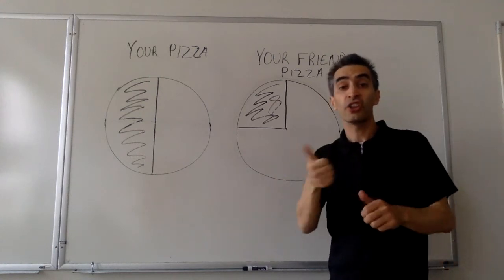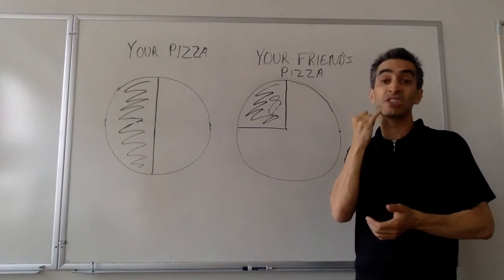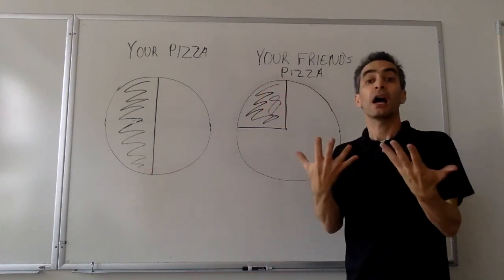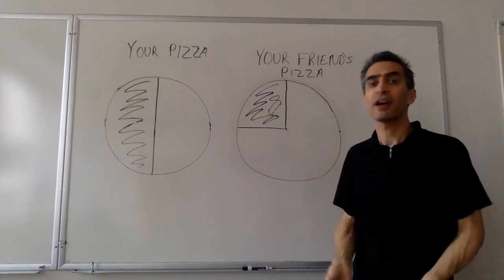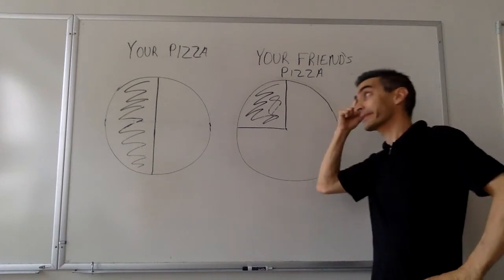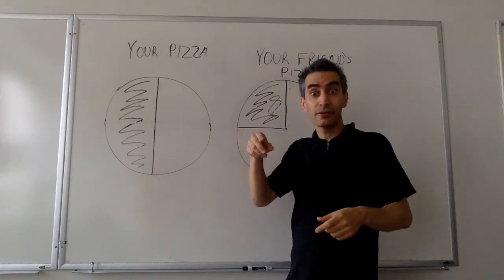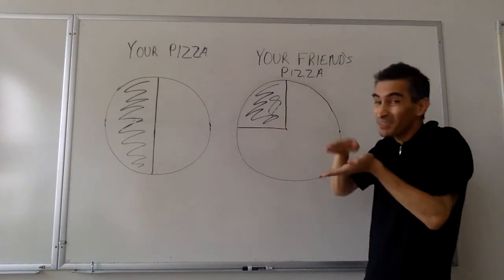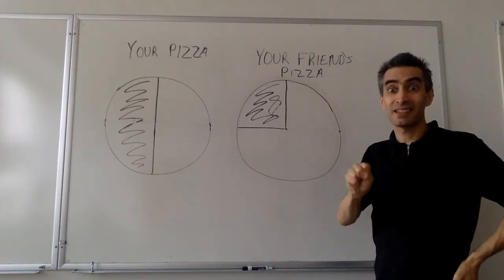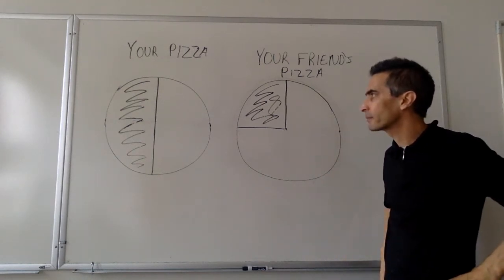This is a picture of your pizza, and this is a picture of your friend's pizza. Now suppose you want to combine both pizzas — how much pizza do you have? How are you going to figure that out? That's a really large piece of pizza, and that's a really small part of pizza. They're not the same size. So how are we going to calculate this?